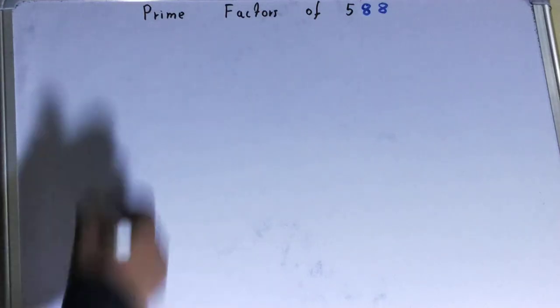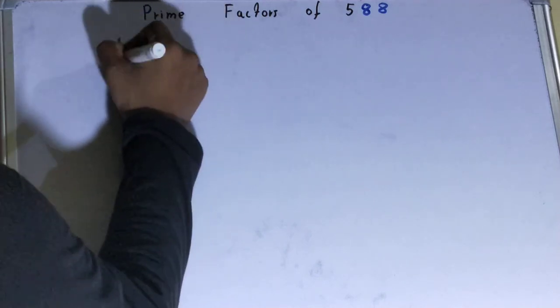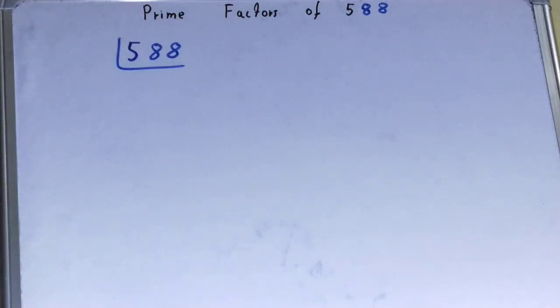So to find out prime factors of the number 588, you need to write the number like this. Alright. And before solving this any further, you must know what prime numbers are.